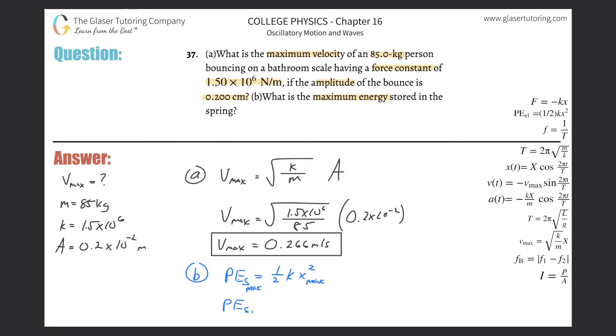Potential energy of the spring max equals one half times the force constant 1.5 times 10 to the 6th, multiplied by the amplitude 0.2 times 10 to the minus 2, and that whole thing squared. That's 0.5 times 1.5 times 10 to the 6th times 0.2 times 10 to the minus 2 squared.